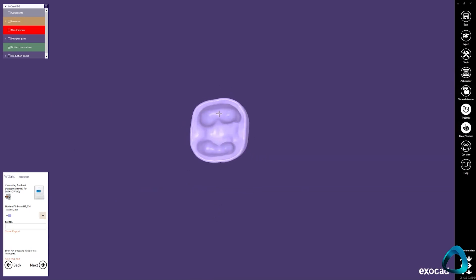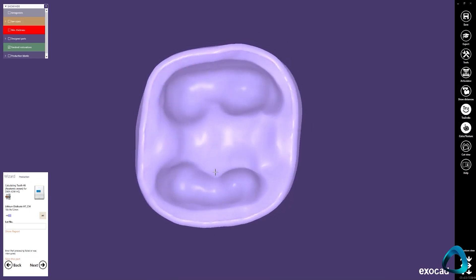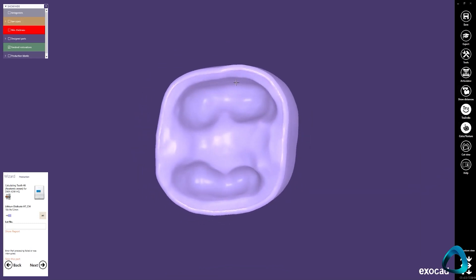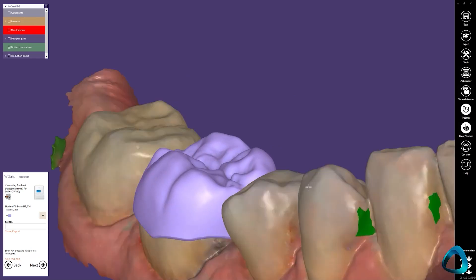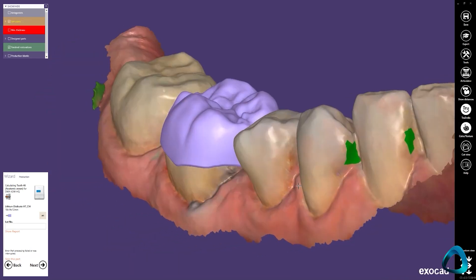Once you get comfortable with this CAD designing process, this shouldn't take you longer than 15 to 20 minutes. If you factor in milling and glazing, you should be able to completely manufacture a crown in-house within one hour with a bit of training.